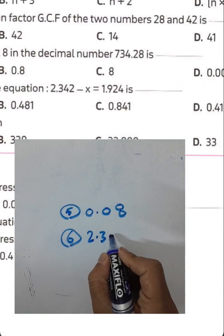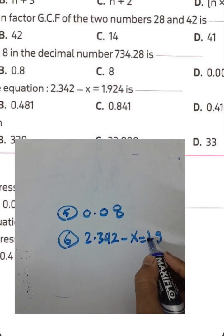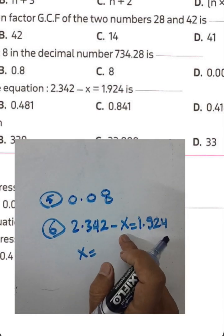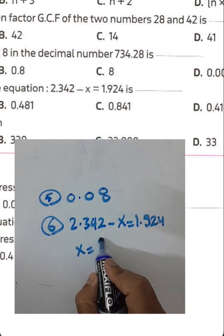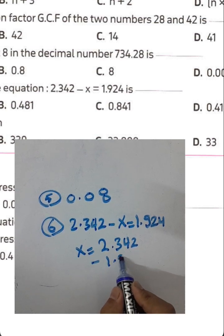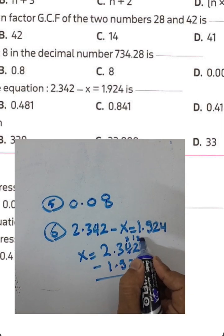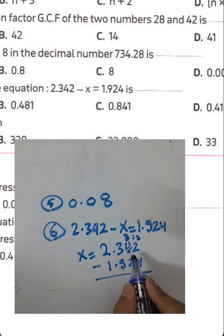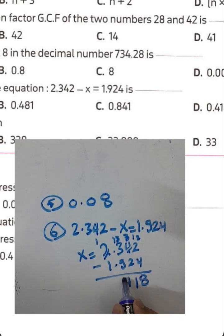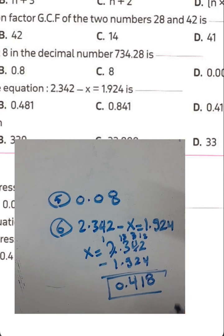To find the value of x, find the difference between the two numbers. We have 2 and 342 thousandths minus 1 and 924 thousandths. 2 minus 4 — borrow: 12 minus 4 equals 8; 3 minus 2 equals 1; 13 minus 9 equals 4; write zero. The result is 0.418, which is 418 thousandths.